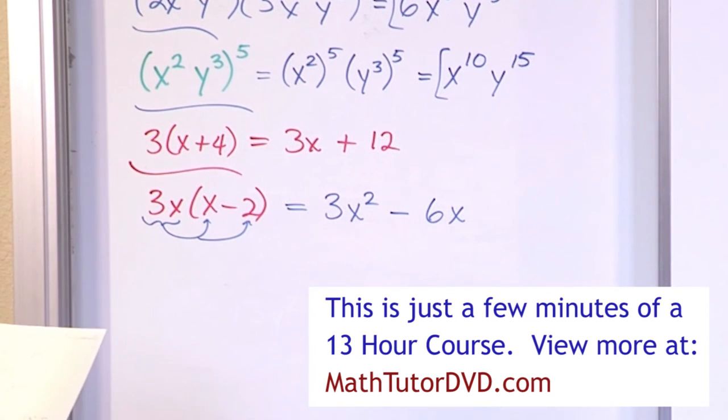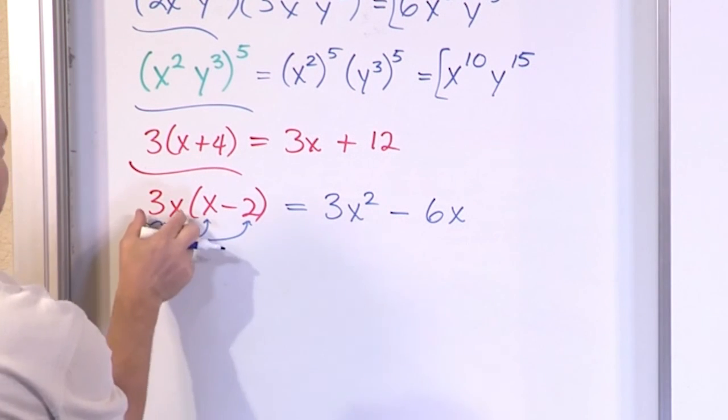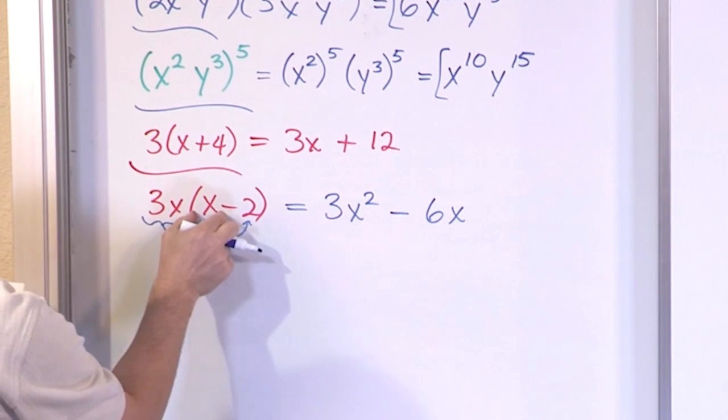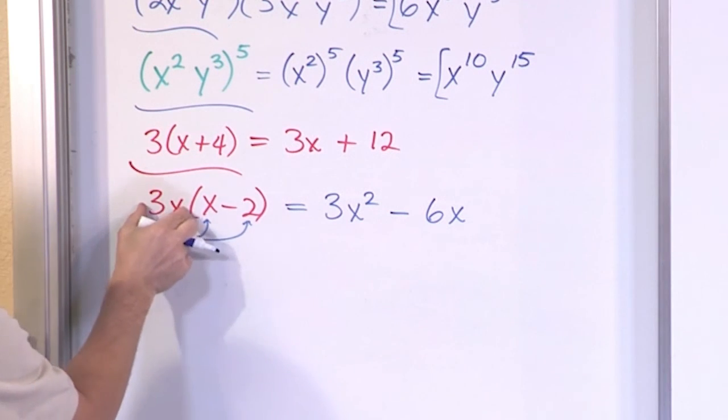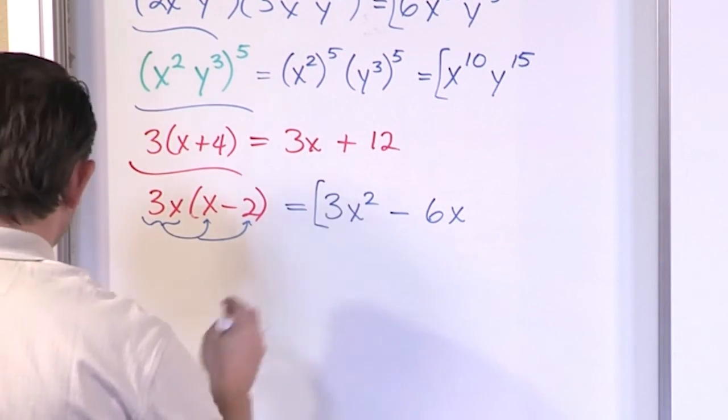There's no other exponent to add it to. So it just comes along for the ride. So you're going to get 3x² minus 6x. So basically here we multiply this times the x giving us this, and then we have this multiplied times the negative 2 to give us this guy over here.